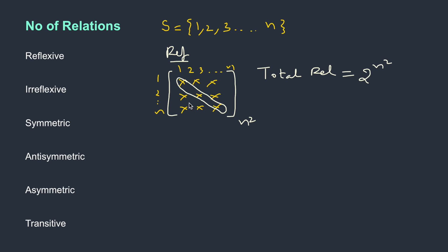In reflexive, these diagonal elements are guaranteed to be picked up. So only the other elements have a choice. In that n squared, we remove the diagonal elements — there are n of them. So the elements that have a free choice are n squared minus n, giving us 2 to the power of n squared minus n reflexive relations.